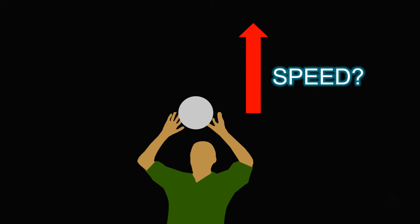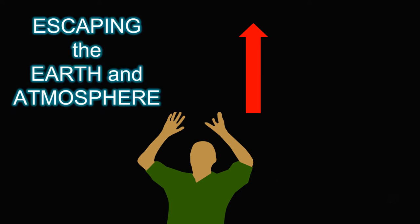Now what if I ask you, is there a speed at which if you threw the ball fast enough that it will just keep going and never come back or escape the Earth and its atmosphere? Well, that speed is actually called the escape speed. Engineers like to say velocity because it makes them sound smarter. Velocity is just speed with direction associated to it. So at the escape speed, the object escapes the Earth and its atmosphere.